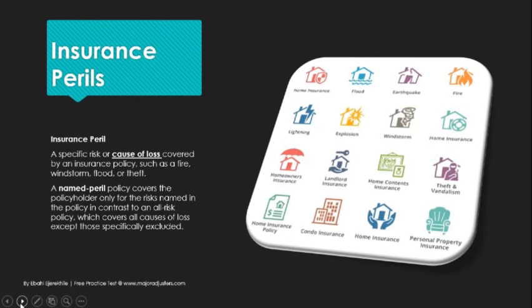A couple more definitions. Insurance peril is a specific risk or cause of loss covered by insurance policies, such as fire, wind, storm, flood, or theft. In a named policy, if it's named, it's covered; if it's not named, it's not covered. These are the different types of coverages available: personal property, earthquake, condo insurance, lightning. A lot of these perils don't happen often, and that's the wonderful world of insurance — and why it makes so much money, because they don't have to pay out.